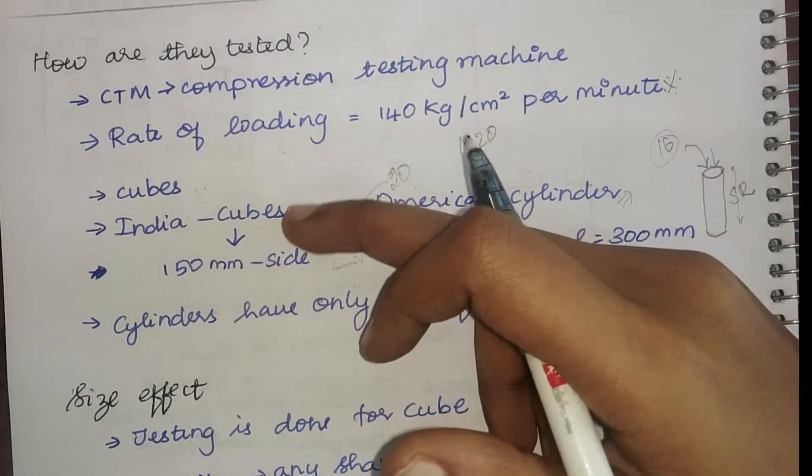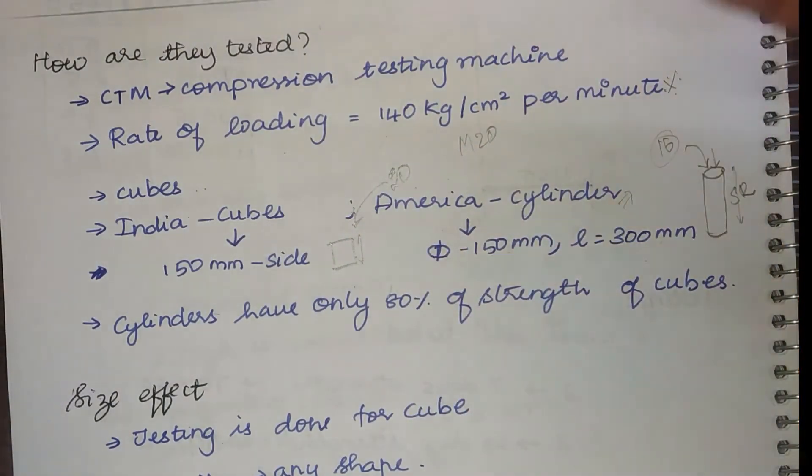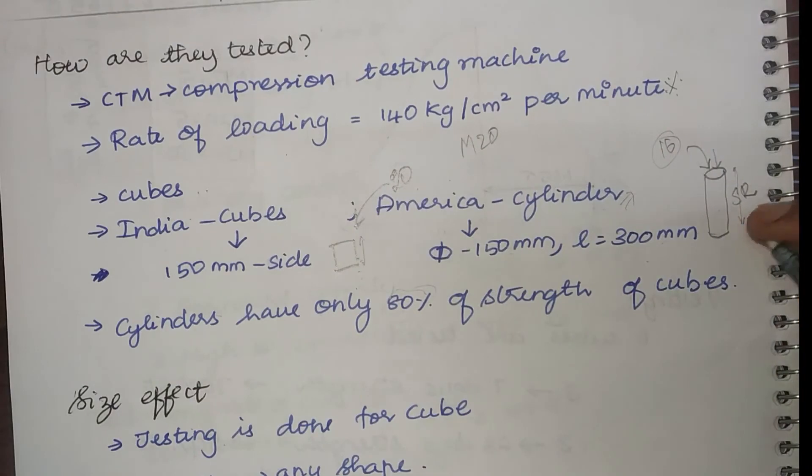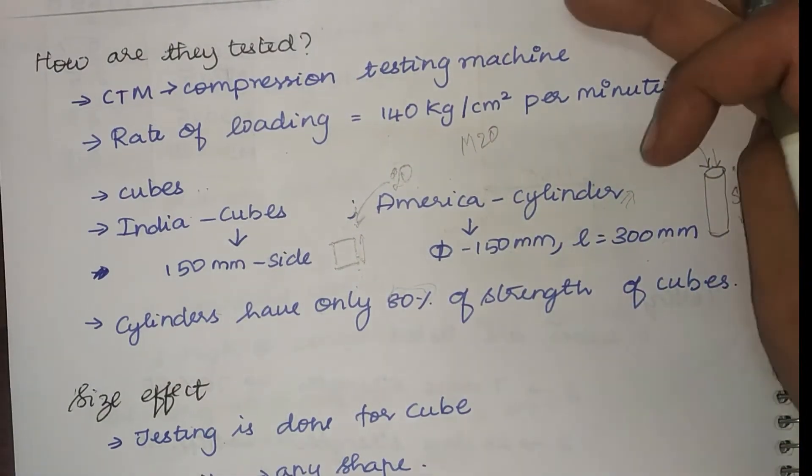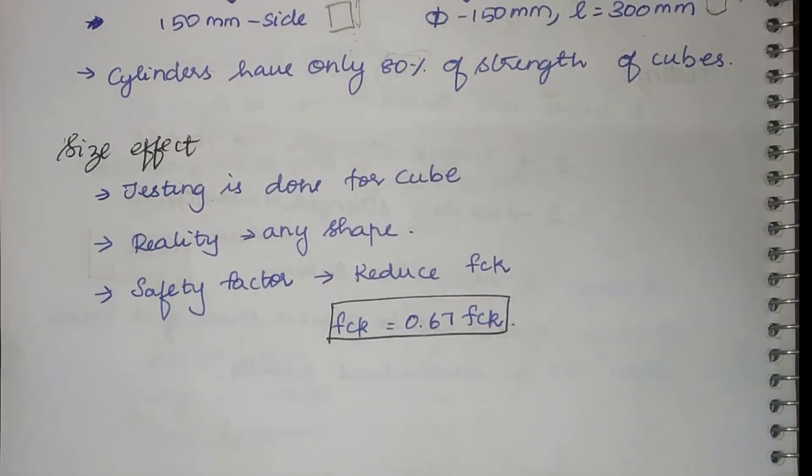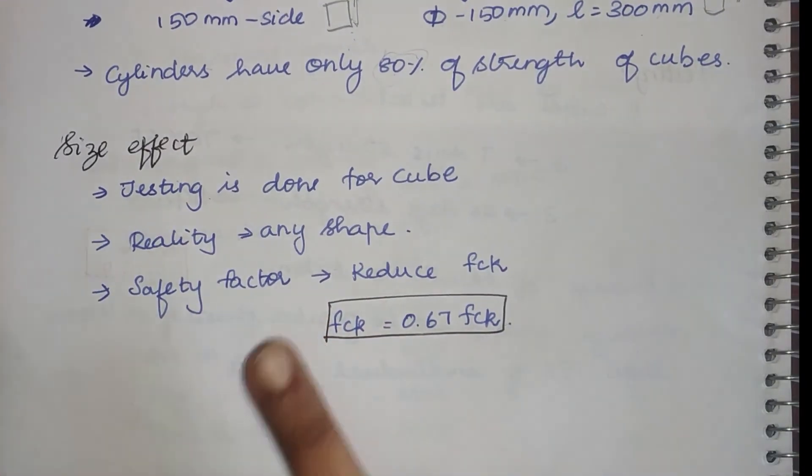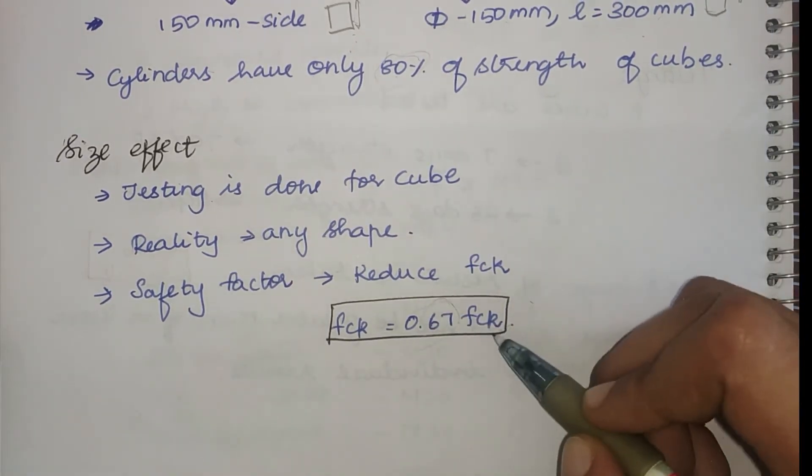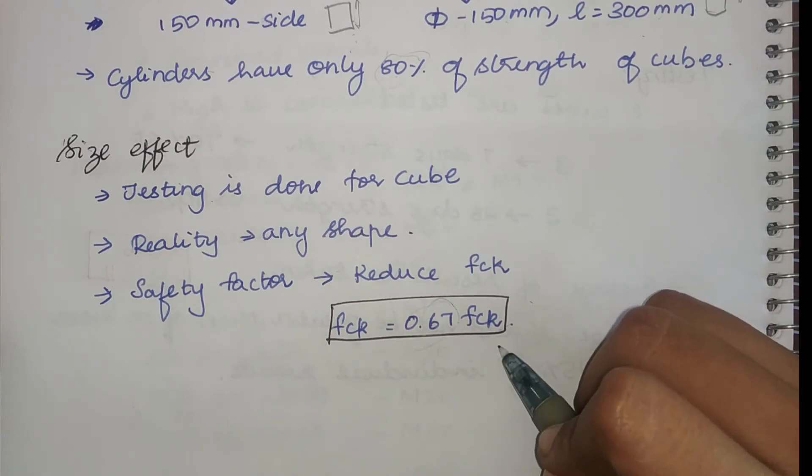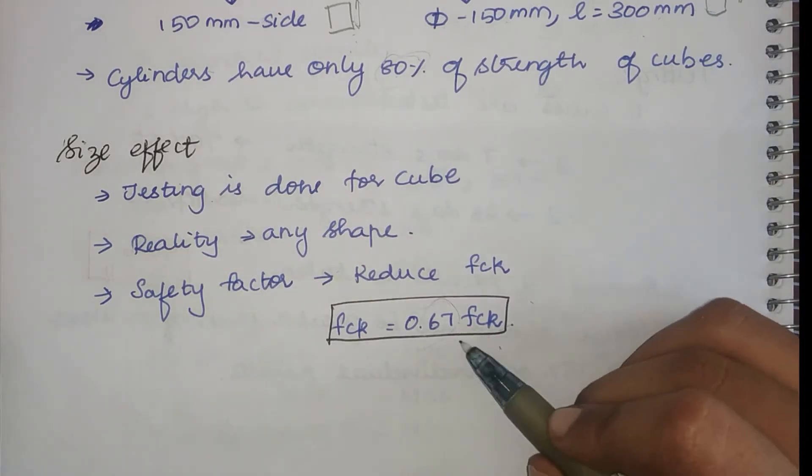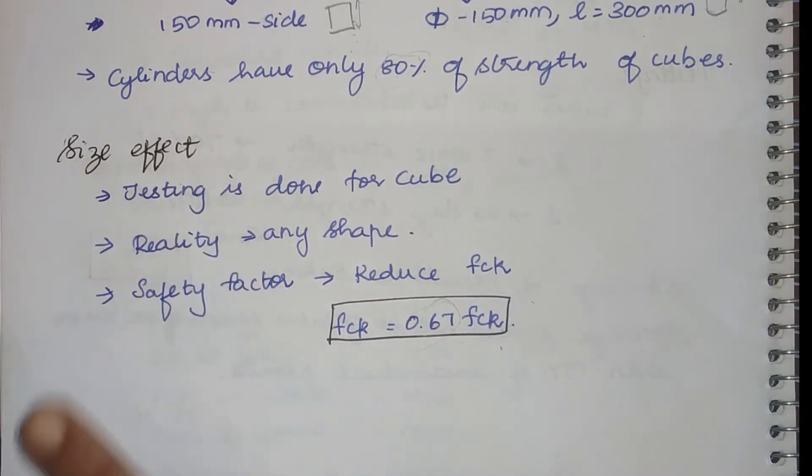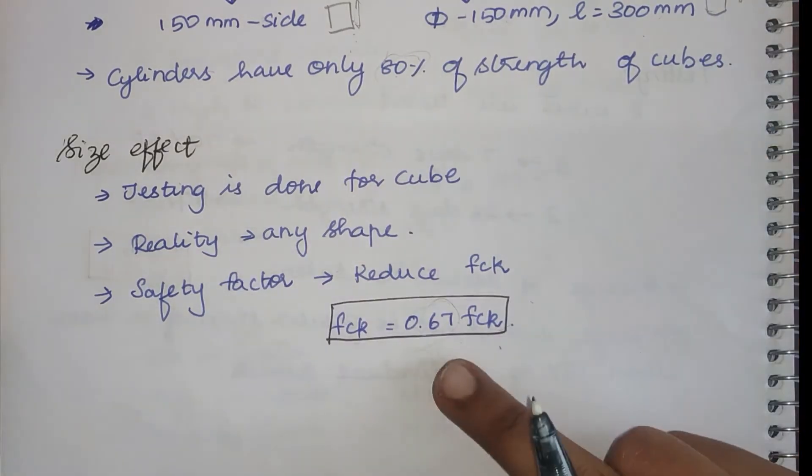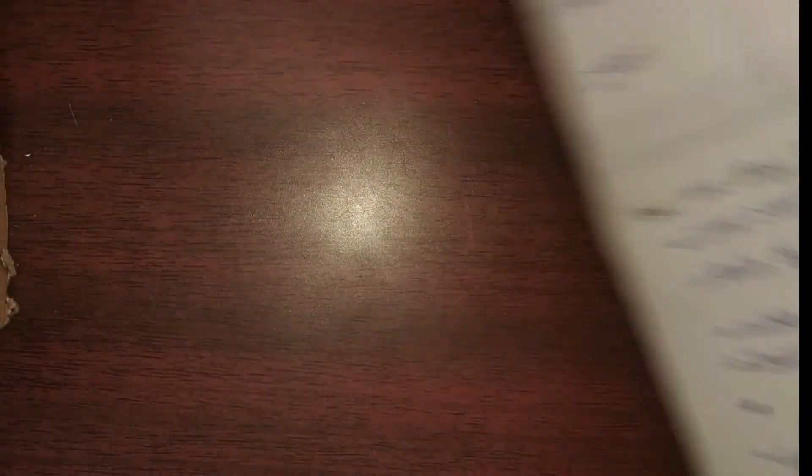Now that we have seen that we are finding fck for the cubes, but in reality we are going to cast beams, columns, slabs which are not going to have the same dimension of the cube. So if there is going to be an 80 percentage decrease just for cylinder, there will be a higher amount of difference when it comes to other shapes. So because of that, in order to have a safe section, we are introducing a factor of safety which will reduce the characteristic compressive strength. For design purposes, only 67 percent of the characteristic compressive strength is taken. This is the reason why you see 0.67 fck in so many equations. It is because of this size effect. In order to make the section safe, we are reducing the fck to 0.67.